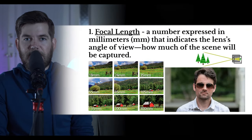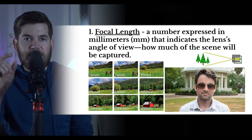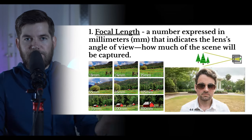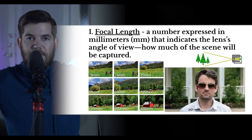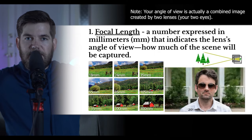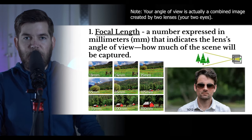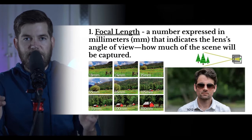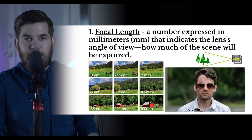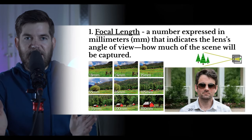If you have your film terms for cinematography, the section for camera lenses is section E. Our first term is focal length. Focal length is a number expressed in millimeters — it's a type of measurement that indicates the lens's angle of view. You can figure out your own angle of view by spreading your hands out until you can't see them. The angle of view is how much of the scene will be captured. With a wider angle of view you capture more, and with a narrower angle of view you capture less.